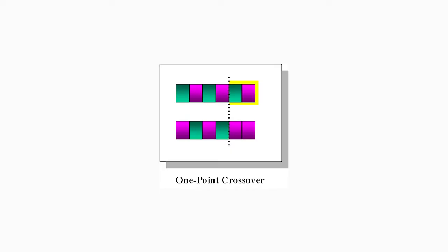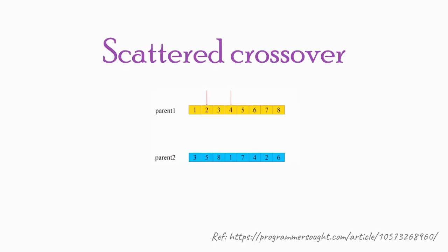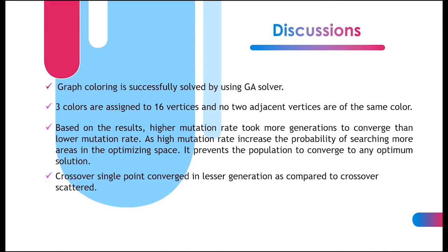In single point crossover, a point is assigned on both parent chromosomes. The genes after the points are exchanged between the two parent chromosomes, while scattered crossover randomly generates more than one crossover point on the parent chromosomes, resulting in the offspring inheriting more genetic information from one parent than another. It might take longer to converge to an optimum solution.